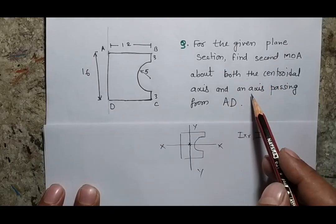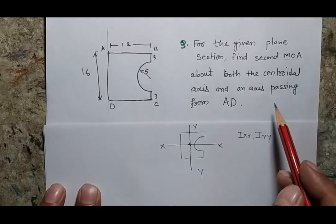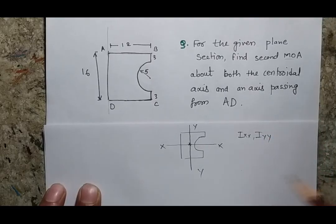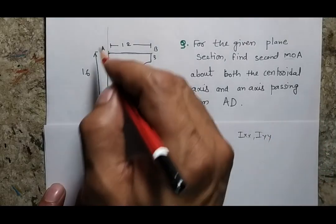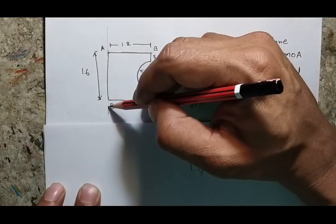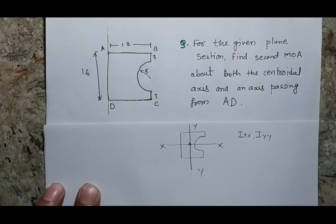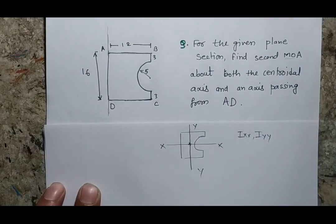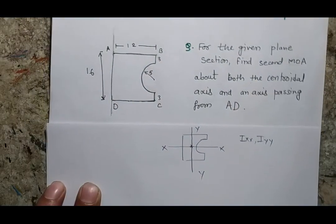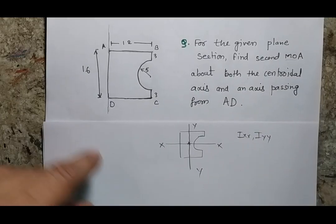It has also been asked that we find the moment of area about an axis which is not centroidal but passing from the line AD — that means one axis passing in that direction. So these are the three different moments of area we have to calculate in this problem. Let's solve the problem step by step.